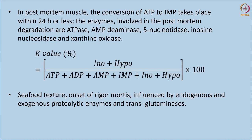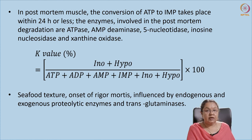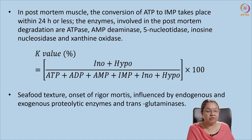Many enzymes are involved in this process — it is a step-by-step conversion from ATP to IMP to hypoxanthine, with enzymes such as ATPase, AMP-deaminase, nucleotidase, 5'-nucleotidase, and xanthine oxidase all playing important roles in the degradation of ATP molecules. Generally, the freshness of fish is indicated by the K value, which is expressed as a percentage — the ratio of inosine and hypoxanthine over all the degradative products from ATP to hypoxanthine, multiplied by 100.